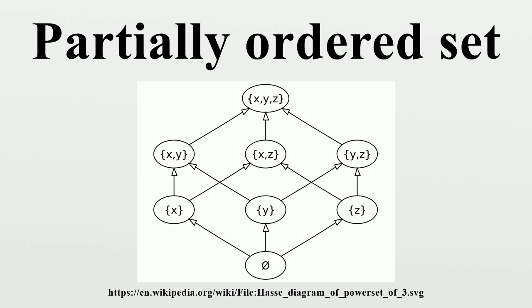In category theory, every poset may be considered as a category in which every hom-set has at most one element. More explicitly, let Hom(X, Y) = {(X, Y)} if X ≤ Y, and Hom(X, Y) = ∅ otherwise. Posets are equivalent to one another if and only if they are isomorphic. In a poset, the smallest element, if it exists, is an initial object, and the largest element, if it exists, is a terminal object. Also, every preordered set is equivalent to a poset. Finally, every subcategory of a poset is isomorphism closed.